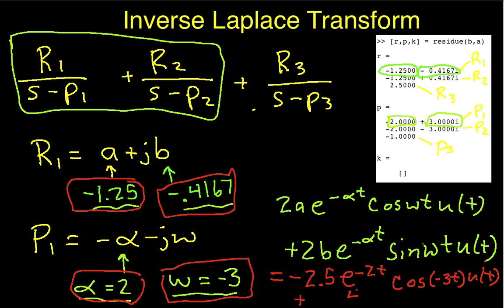which is going to be plus 2 times 0.4167. So, I'll do this in my head to make sure I get it wrong. So, this is going to be negative 0.8334 e to the minus 2t sine minus 3t u of t.